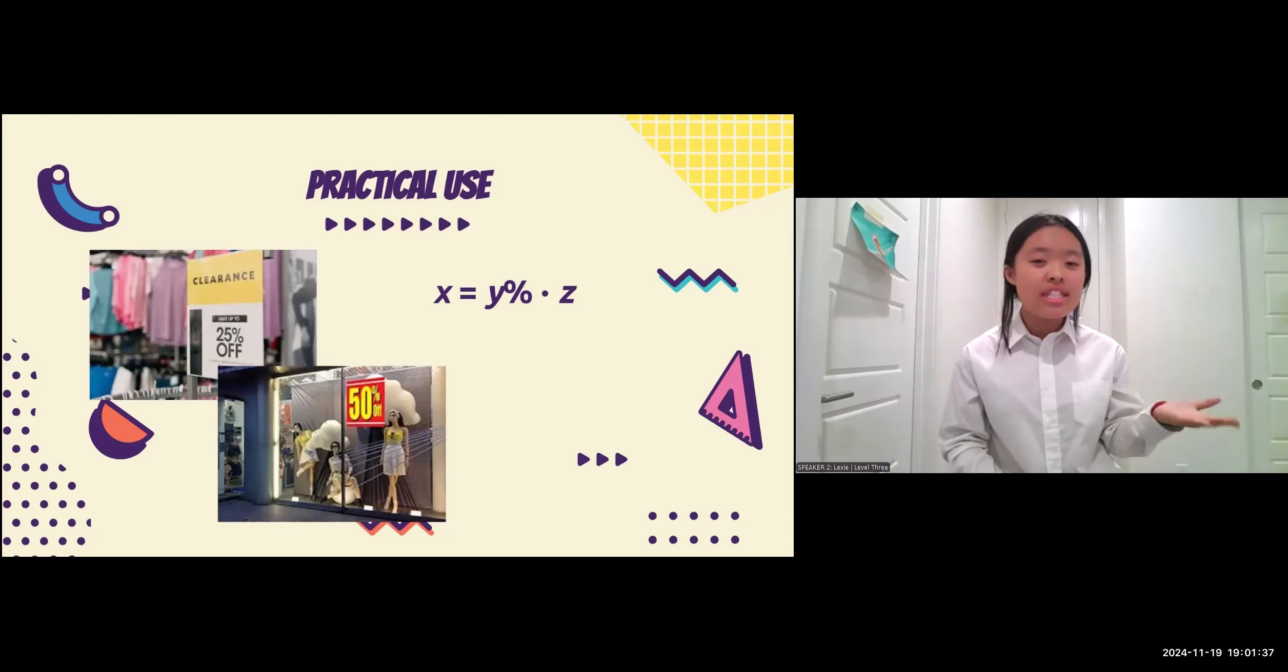These clothes are 25 percent off. And y in this case would be the unknown percentage, which would again be 25. x in this case is the amount you would save, which is, in my opinion, what most people want to know. And then finally,